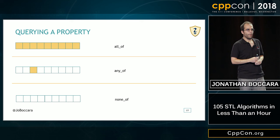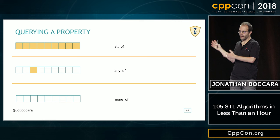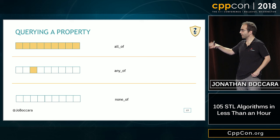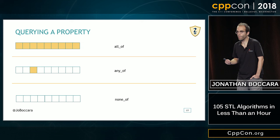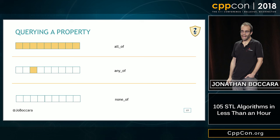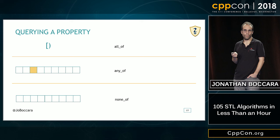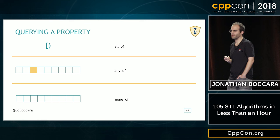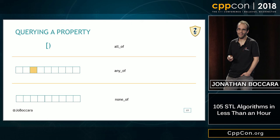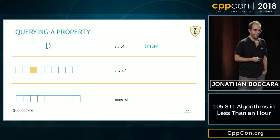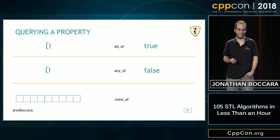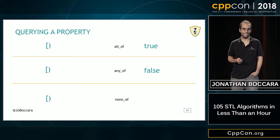Apart from querying a value, we can query a property. There's all_of, any_of, and none_of, which are really useful in everyday code. all_of takes a collection and predicate and returns whether all elements satisfy that predicate; any_of returns whether at least one element satisfies it; none_of returns whether no element satisfies it. On an empty collection: all_of returns true, any_of returns false, and none_of returns true.